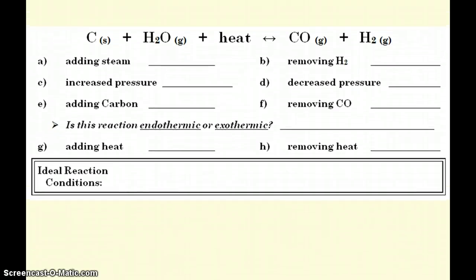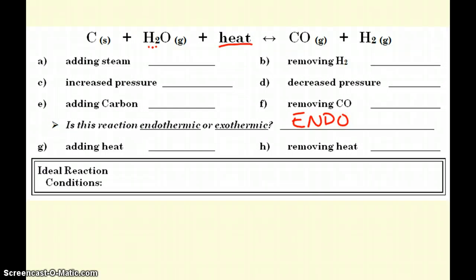Here we have another equilibrium: carbon and steam, when heated together, will make carbon monoxide gas and hydrogen gas. Here we see that heat is a reactant going into the reaction, so this is an endothermic reaction. Adding steam — steam is water gas — you're going to make it shift to the right. Remove hydrogen — hydrogen is a product — when I remove the product, I get the reaction to shift that way to replace it.